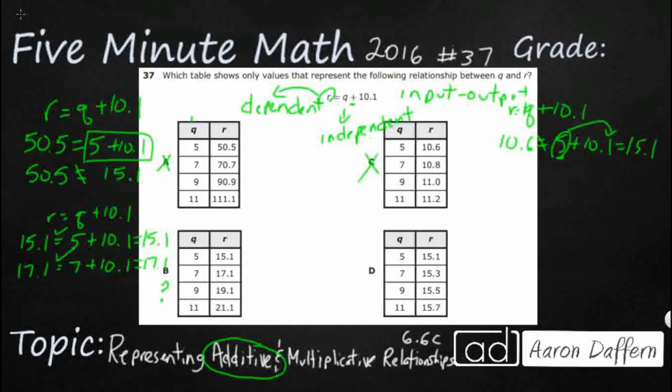And finally, let's take a look. r equals q plus 10.1. Let's look at D. I don't think it's it because I think B is my answer, but we do have a 15, so that's looking pretty good here. So let's look at r equals 10. So I've got 15.1 equals my q is 5 plus 10.1, 5 plus 10.1. That's going to equal 15.1. So, ooh, look at that. It does work.